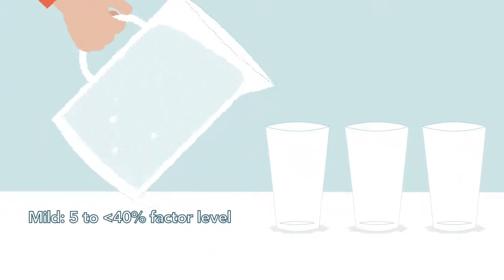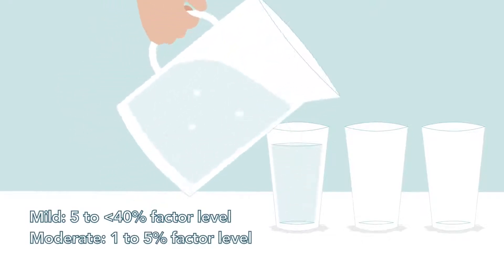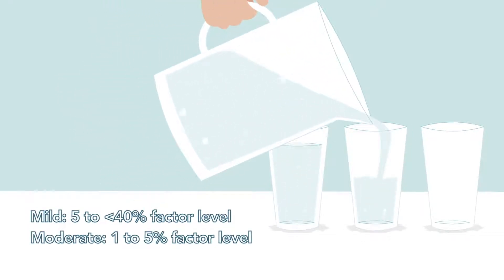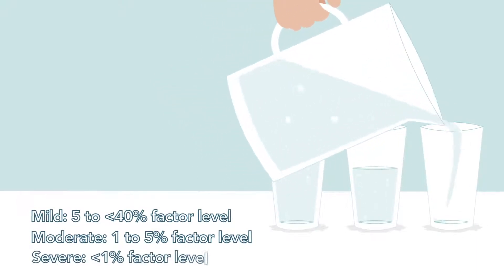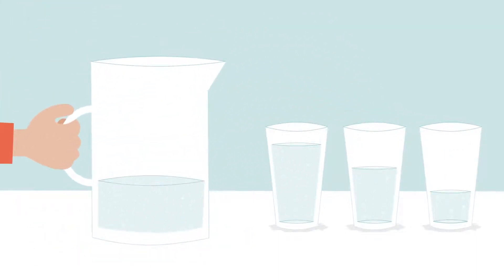People with mild or moderate haemophilia have small amounts of factor in their blood. People with severe haemophilia have almost no factor in their blood.